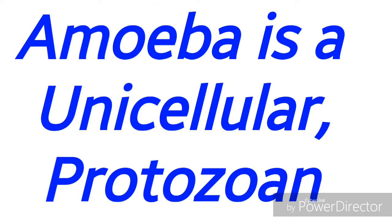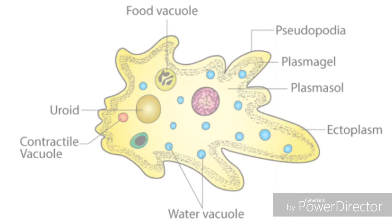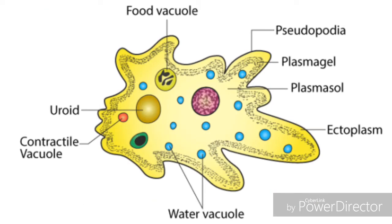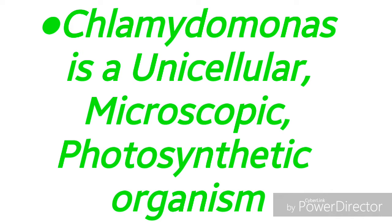Amoeba is a unicellular protozoan. Protozoans are microscopic organisms. Here you can see the structure of amoeba. In the middle of the cell you can see a prominent spherical body called the nucleus.